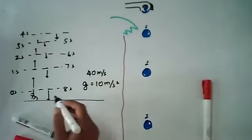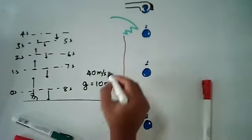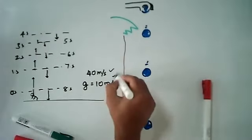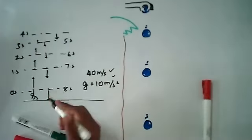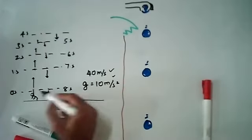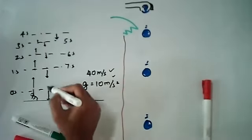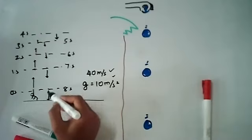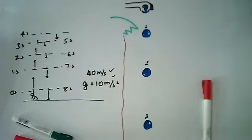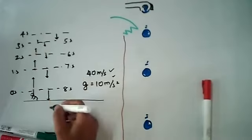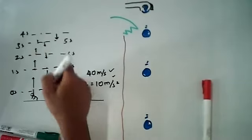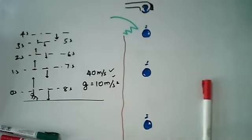The surprising thing is that with just these two pieces of information we can predict quite a lot about what happens. For example, when the object comes back to the same position — provided air resistance is negligible — it's going to have a velocity of 40 meters per second but in the opposite direction.